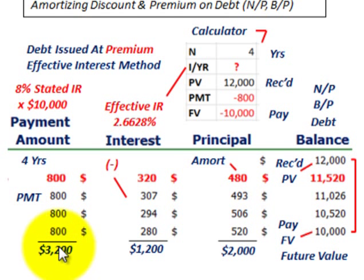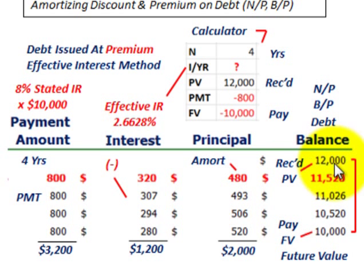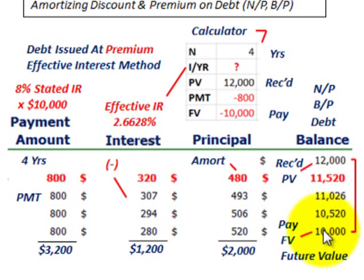So over four years, we're going to pay out a total of $3,200 in cash payments. This is where we have to calculate an effective interest rate to amortize this note from the present value of $12,000 down to the future value of $10,000. This is where our financial calculator comes in.